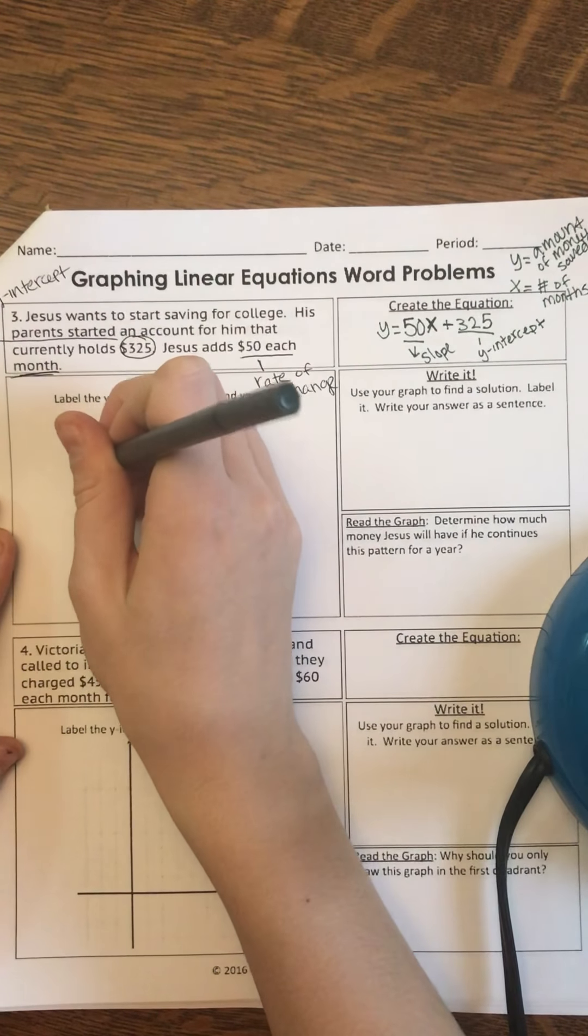Months, we go 1, 2, 3, 4. So I'm going to label it 1, 2, 3, 4, 5, etc.